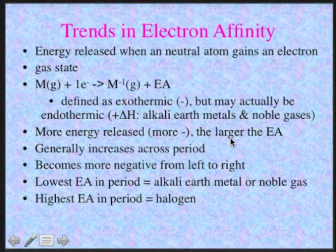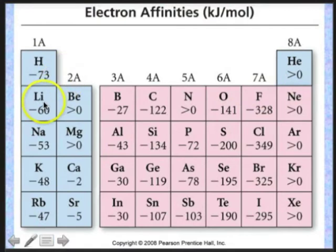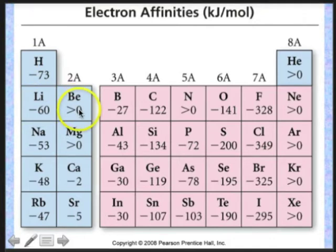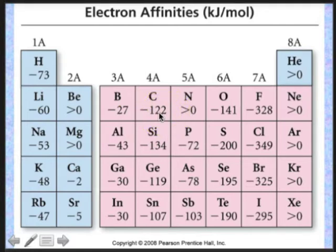The lowest electron affinities in a period belong to the alkaline earth metals and noble gases; the highest belong to the halogens. From the table: lithium is −60 kJ (exothermic), beryllium is endothermic (greater than zero), boron is −27, carbon is −122, nitrogen is endothermic again, oxygen is exothermic, fluorine is very exothermic, and then the noble gas is back in positive enthalpy territory.